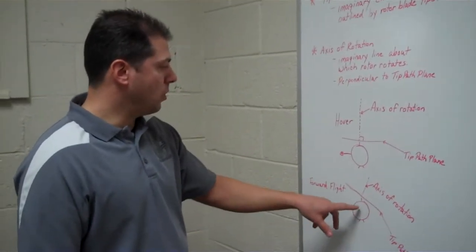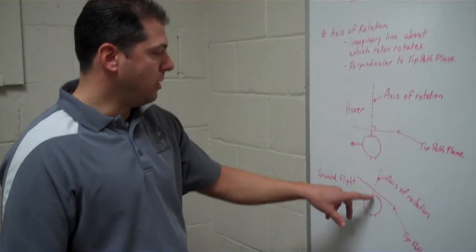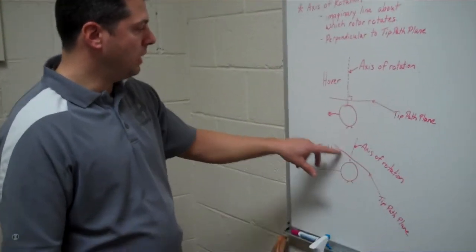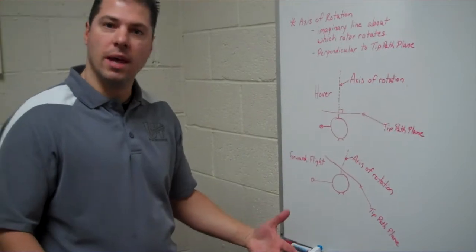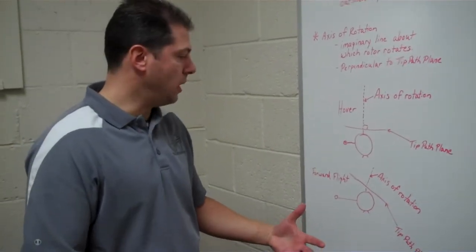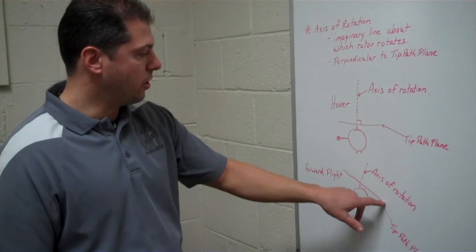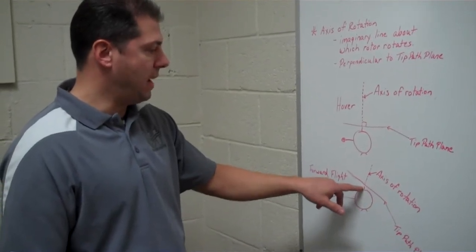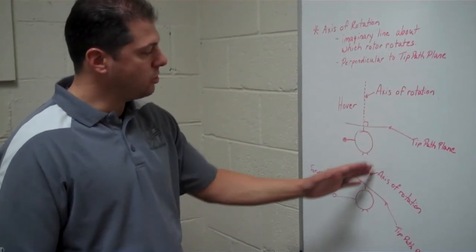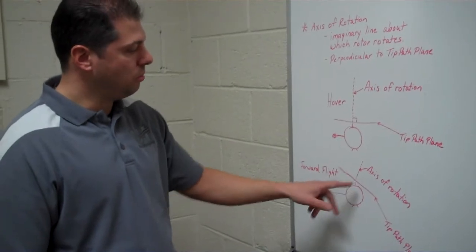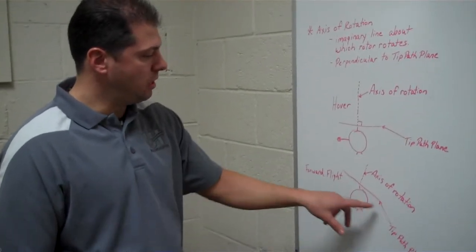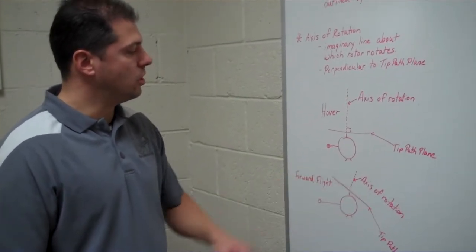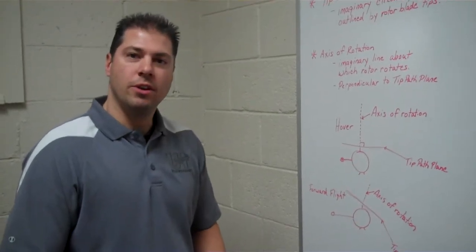So here's forward flight. You've got your mast right here, but then your rotor blades are tilted in order to get that thrust for forward flight. And you can see the tip path plane - the edges are going to be much different than where the mast is. Now your axis of rotation is still perpendicular to your tip path plane, so it's a lot different.